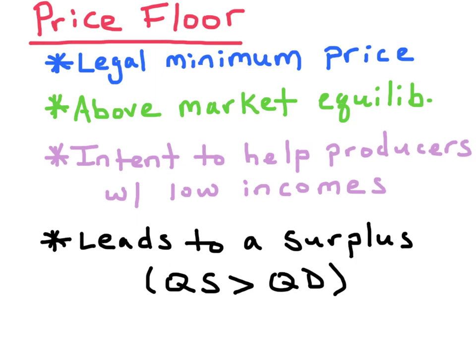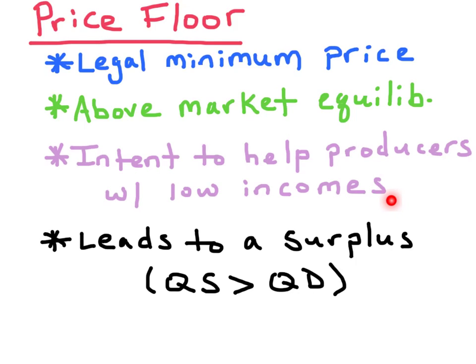An effective price floor occurs when the government sets a legal minimum price above market equilibrium. The goal is to help out producers with low incomes. This might sound like a good idea; however, it leads to misallocation of resources. It will lead to a market surplus — the quantity supplied will be greater than the quantity demanded.